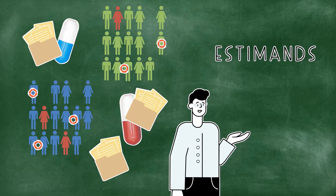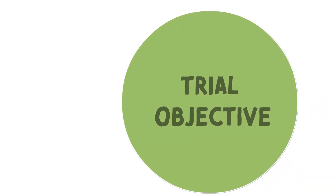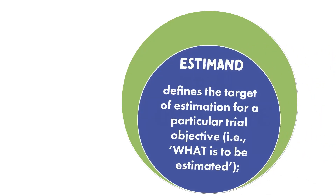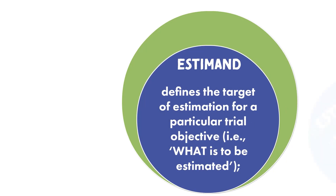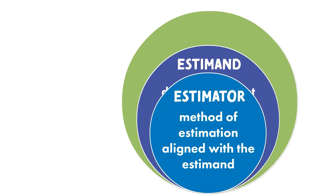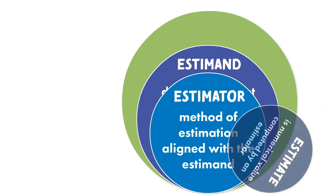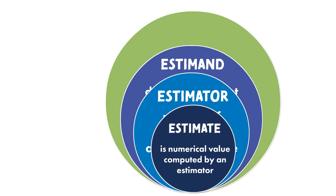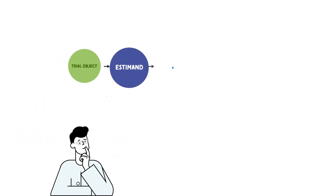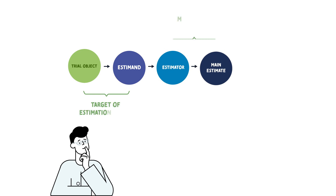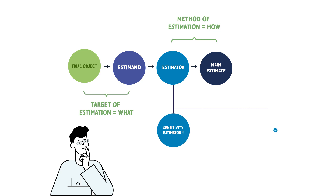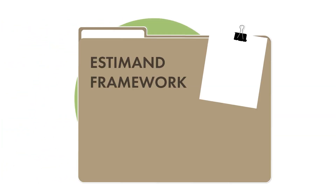Could you tell me more about this? An estimand is a particular trial objective — it answers the question of what is to be estimated, accounting for relevant intercurrent events. An estimator is a method of estimation, in other words, an analytic approach aligned with the estimand. An estimate is a numerical result computed by an estimator. As the estimator is always underpinned by assumptions, the robustness of the results should be assessed through an estimand-aligned sensitivity analysis.